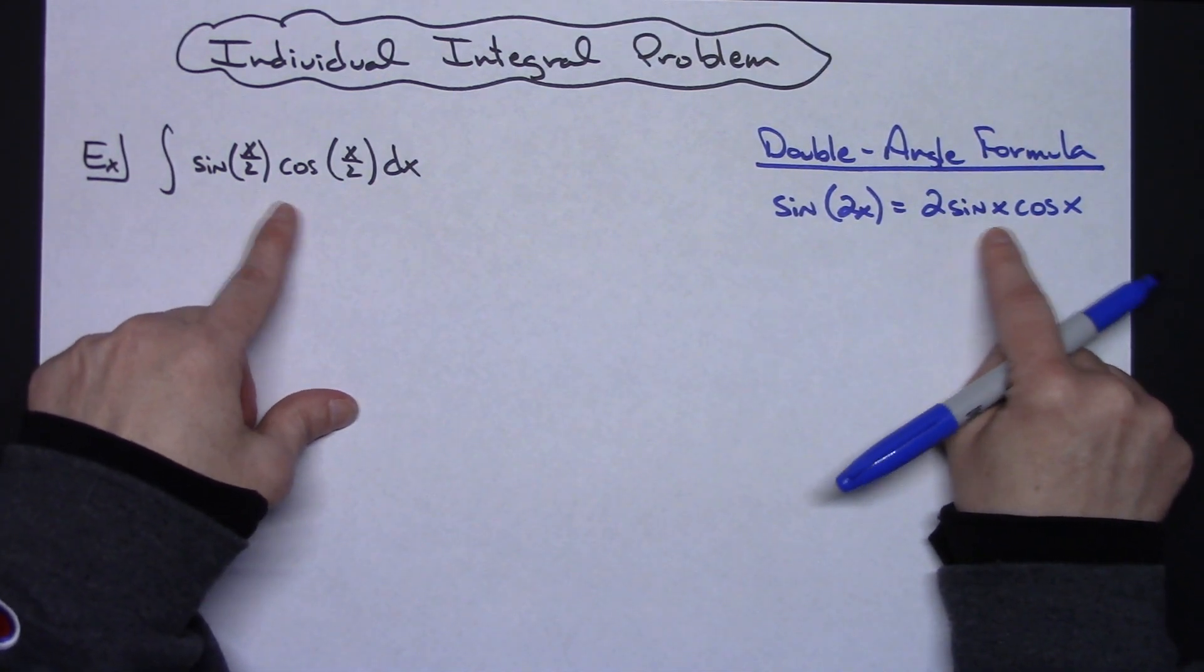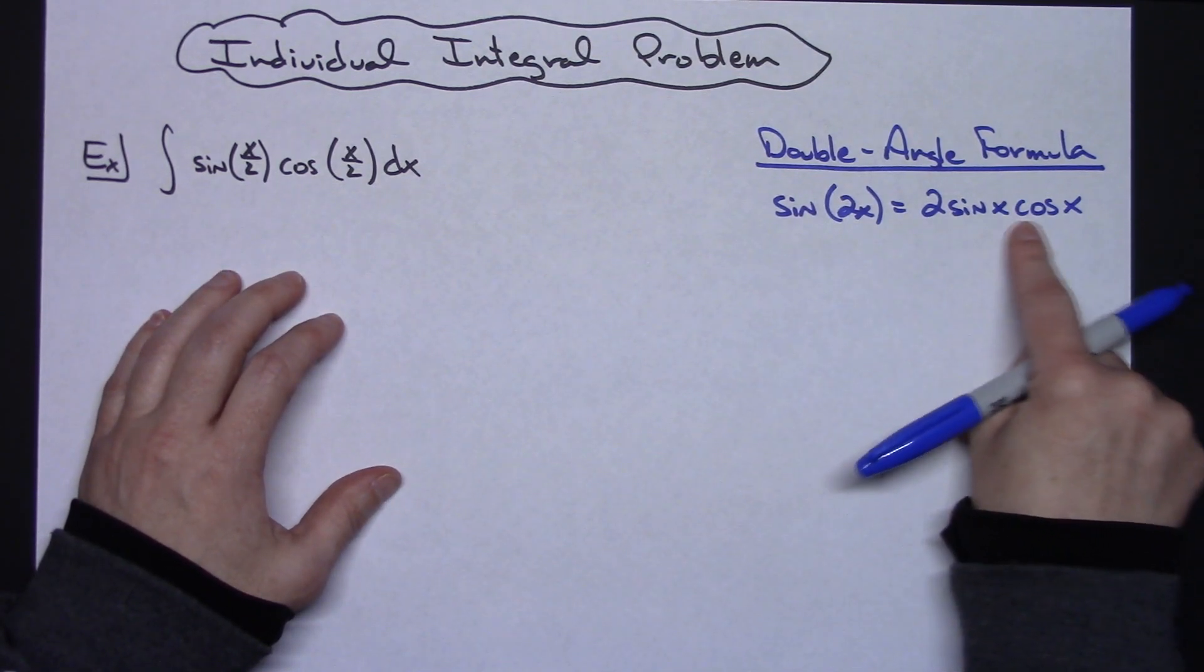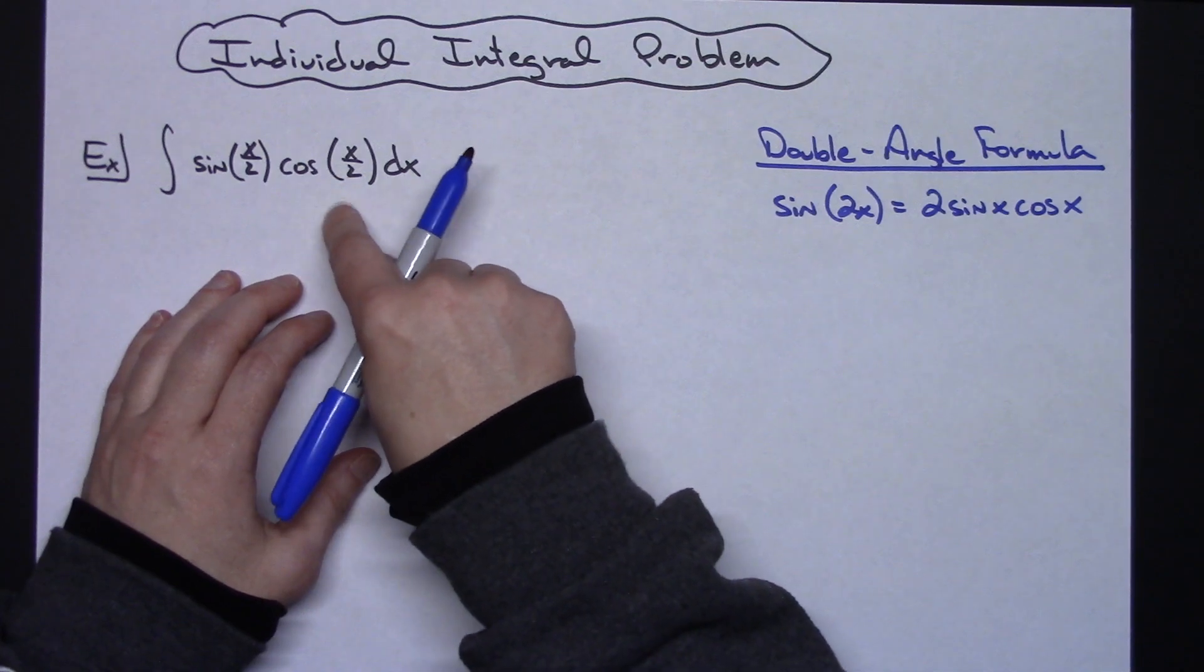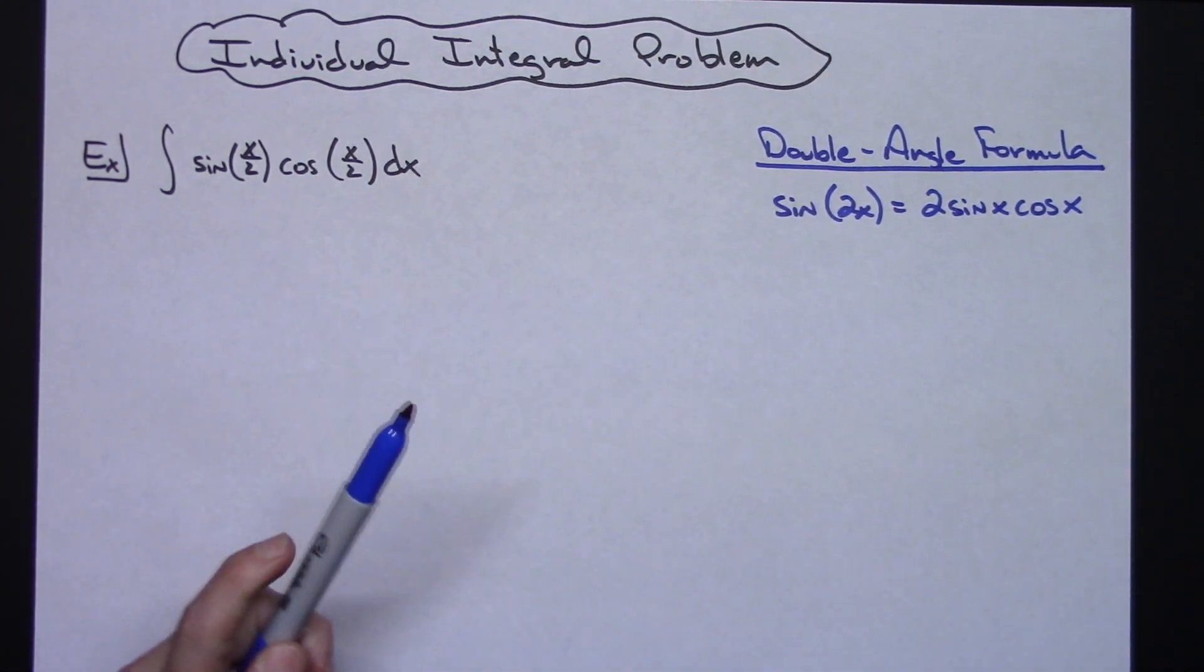Now while this does not look exactly like what I need it to look like for any type of substitution, if I play around with this and manipulate this, then I can get it to look like this for an easy substitution which will then make the integral a whole lot easier.